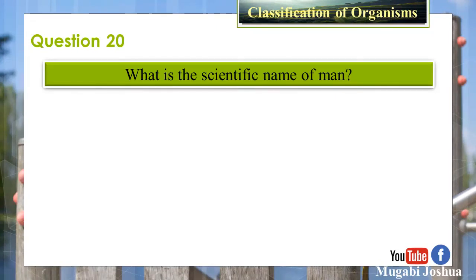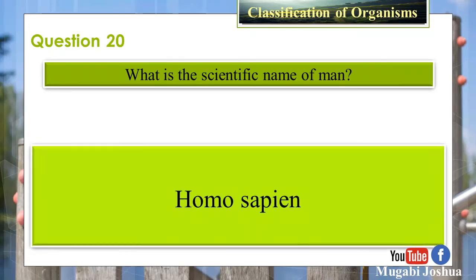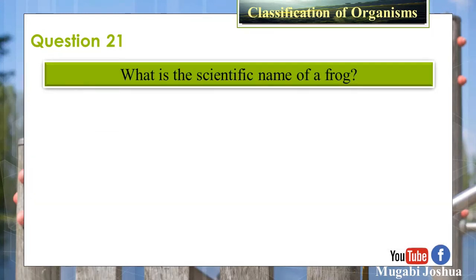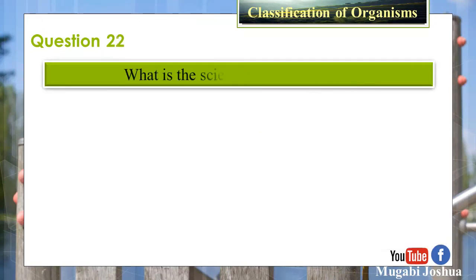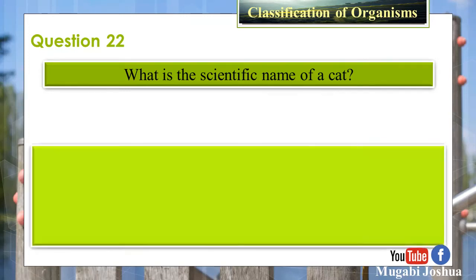Question 20: What is the scientific name of man? Answer: Homo sapiens. Question 21: What is the scientific name of a frog? Answer: Rana tigrina. Question 22: What is the scientific name of a cat? Answer: Felis domestica.